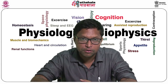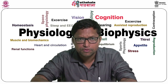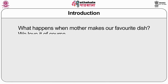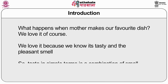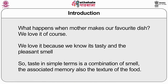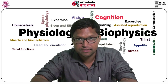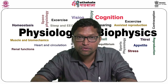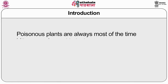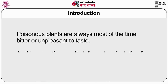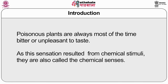Now let's talk about taste, because smell and taste go hand in hand. When your mother makes your favorite dish, you love it because it's tasty and pleasant to smell. Taste in simple terms is a combination of smell, associated memory, and texture of the food. Not all foods are pleasant to taste. In the course of evolution, taste evolved as a tool to warn animals against harmful foods — for example, poisonous plants are most often bitter or unpleasant to taste.